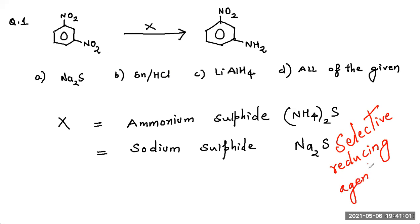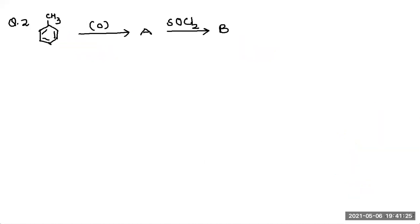Hence, they selectively reduce one of the nitro group to amino, while if I use Sn/HCl or LiAlH4, then they'll reduce both the groups. So we cannot use Sn/HCl or lithium aluminium hydride since they are not selective reducing agents on the nitro group. So let us see the next.